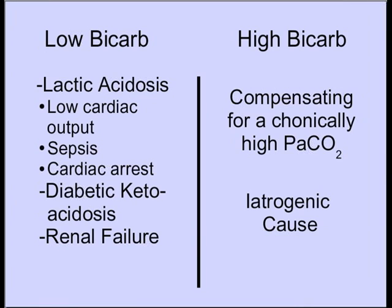Bicarb can go down very rapidly, and will do so in cases of lactic acidosis — when oxygen is not adequate to meet the demands of tissue, the tissue goes into anaerobic glycolysis and lactic acid builds up. The bicarb then buffers that lactic acid and starts to drop. This can happen in cases of low cardiac output, sepsis, or cardiac arrest. Bicarb can also go down rapidly in diabetic ketoacidosis and in renal failure.